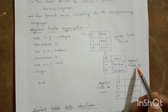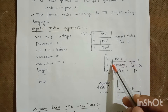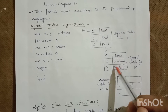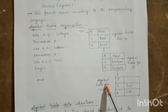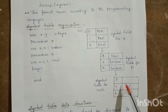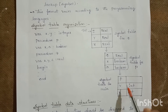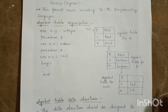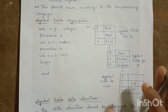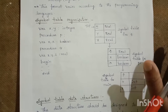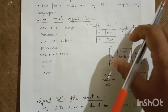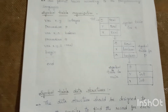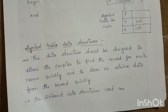The symbol table for procedure p contains q, x, and a — where q belongs to type real and x, a are boolean. The symbol table for main contains p, q, and x — where q and x are of type int and p is a procedure. Whatever entities are used in the program, their corresponding data will be stored in the symbol table.